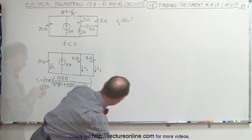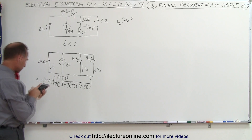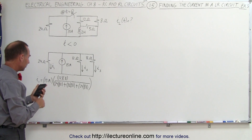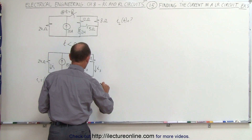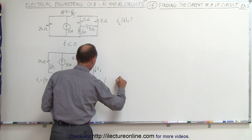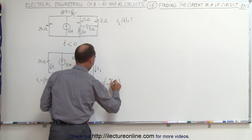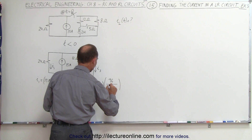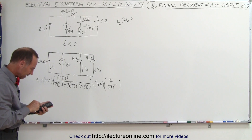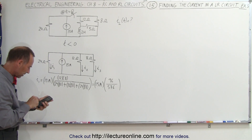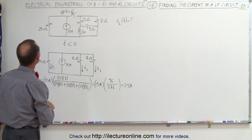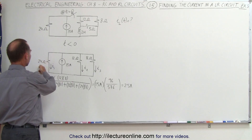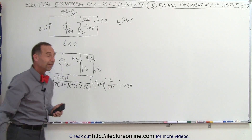We need a calculator for that. In the denominator we get 24 times 12 plus 12 times 8 plus 24 times 8, which equals 576. So this is equal to 15 amps times the ratio: numerator 96, denominator 576. That gives us 2.5 amps. Of course, the branch with the larger resistor will have the smallest amount of current — 2.5 amps.